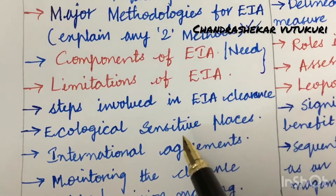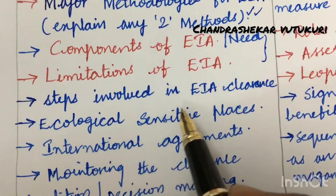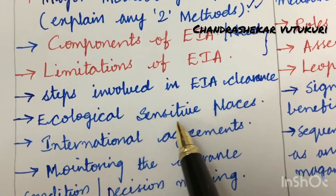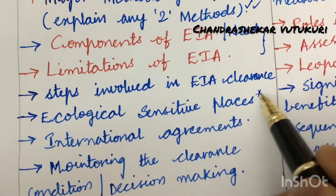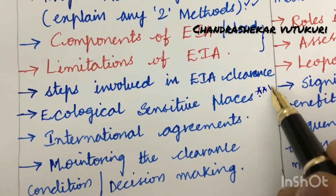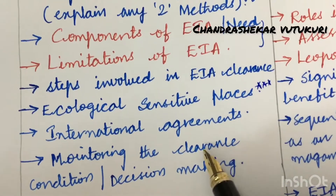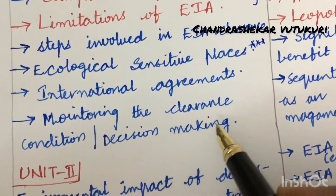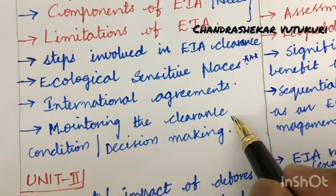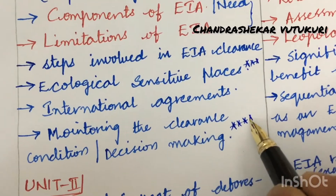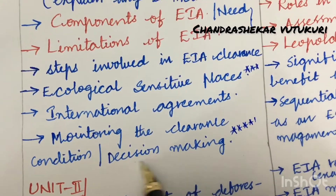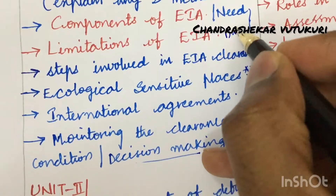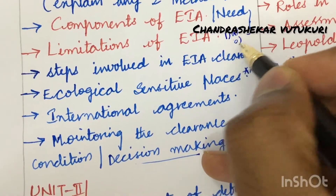The steps involved in EIA clearance, ecological sensitive places — said to be a top gunshot question — international agreements, monitoring the clearance condition, and decision making may be asked for sure in the question paper. This is all about Unit 1A as well as 1B.